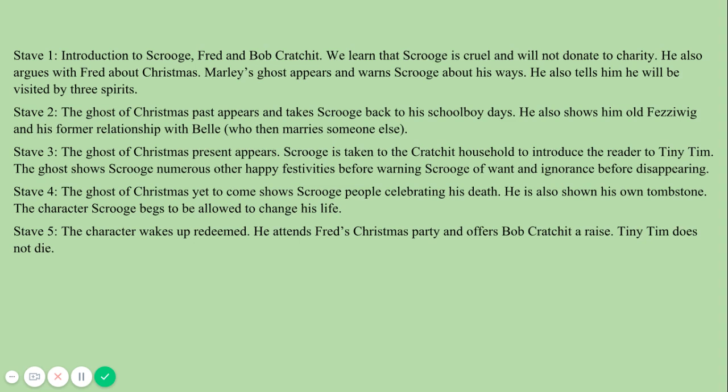In Stave One we have the introduction to Scrooge, Fred, and Bob Cratchit. We know that Scrooge is cruel and will not donate to charity. He also argues with Fred about Christmas. Marley's ghost then appears and warns Scrooge about his ways, telling him he will be visited by three spirits.